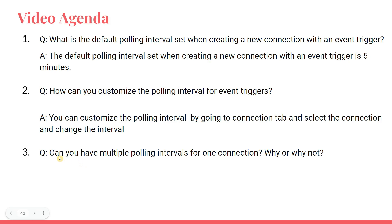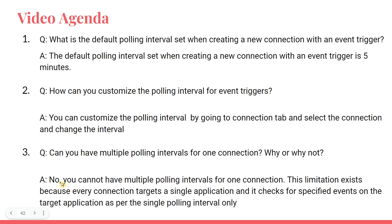Question number three: Can you have multiple polling intervals for one connection? Let's say Microsoft OneDrive is one connection — can you have multiple? No, you cannot. You cannot have multiple polling intervals for one connection. This limitation exists because every connection targets a single application, so it checks that application every five minutes or every one minute, and it checks for specified events on that target application using only a single polling interval.